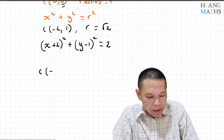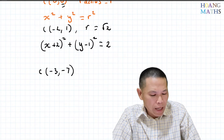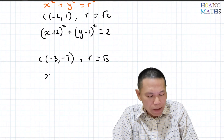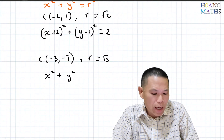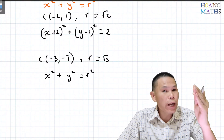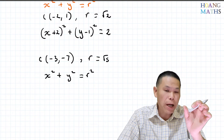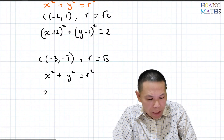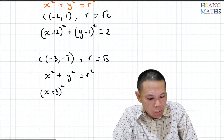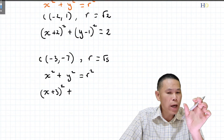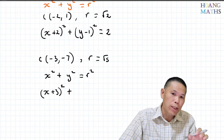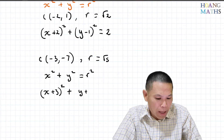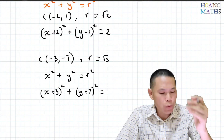Let's try center (negative 3, negative 7) with radius root 5. Starting from x squared plus y squared equals r squared: for x, zero becomes negative 3, so it moved three to the left, giving (x plus 3) squared. For y, it moved seven units down, so we get (y plus 7) squared. The radius squared is (root 5) squared equals 5.